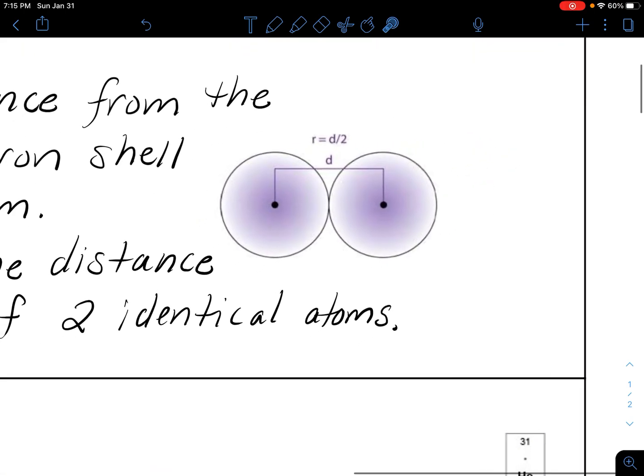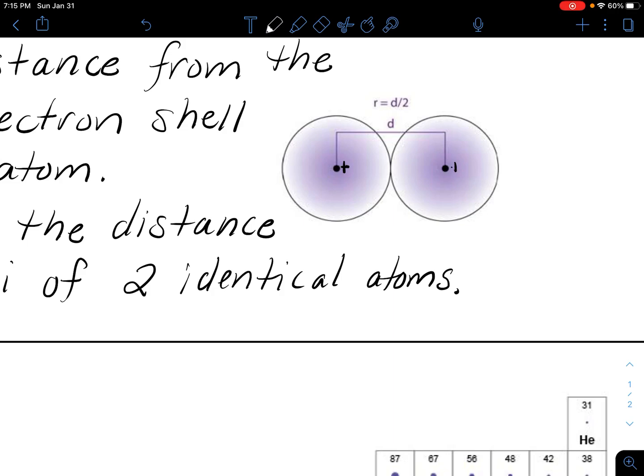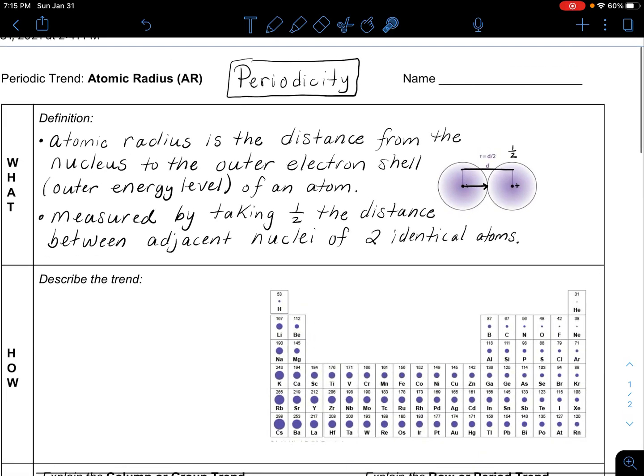They have to measure it by taking one half the distance between adjacent, means they're right next to each other, typically bonded, nuclei of two identical atoms. Here is my nucleus of one atom. Because this outer electron shell is consistently and constantly moving, we can't easily measure the outer barrier. So chemists start from one nuclei to another adjacent nuclei, take that distance and cut it in half. The nucleus is slightly moving but nowhere near the electrons and it's much easier to get that stationary distance.